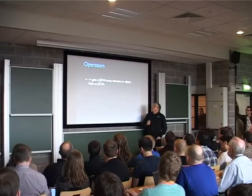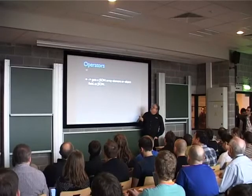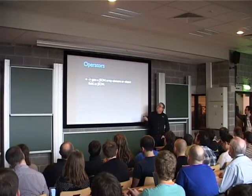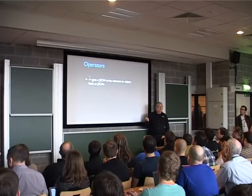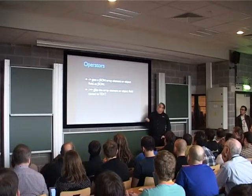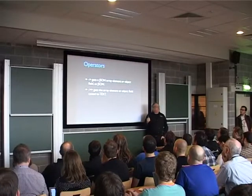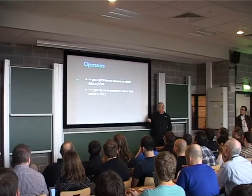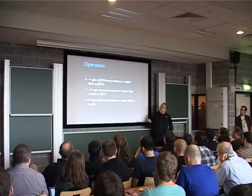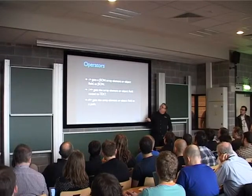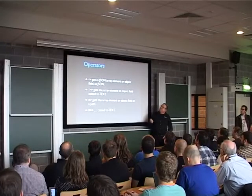It comes complete with its own set of operators. There's the arrow operator, which gets a JSON array element or object field — either an integer index or the key for the field — as JSON. If there's no match, it returns null. The double-arrow gets the array element or object field and casts it to text. Generally, if you're actually getting something out of the database, you want the double arrow, because the single arrow returns something of type JSON. There's also a path operator — hash arrow and the matching one.